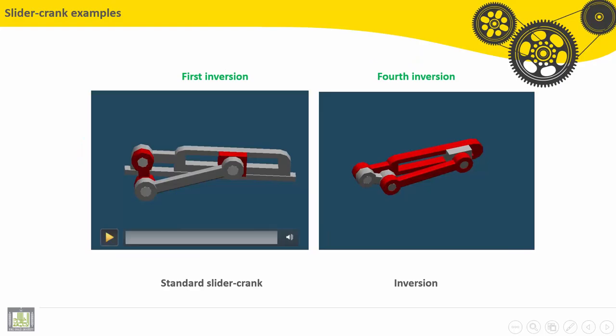This is animation for the first inversion. Here, this is the standard slider crank mechanism. The input motion can be given to the slider or to the crankshaft.